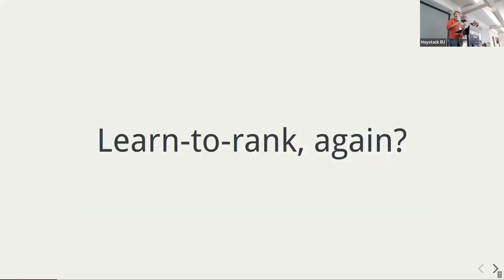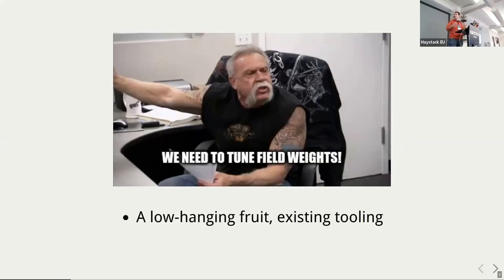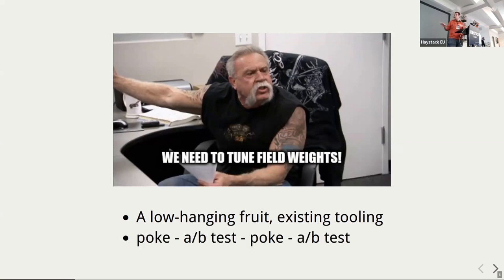You might say that learned to rank is not on the hype anymore — it's not vector search — but probably because such things are getting commoditized. It's not just early adopters but early majority trying to use it. Improvement projects usually start with low-hanging fruits: tune field weights, because there is tooling for that. You do an A/B test, play a bit, maybe just a visual A/B test — you open your search, see that it looks good, and assume the test succeeded.